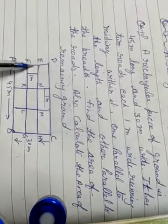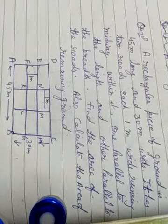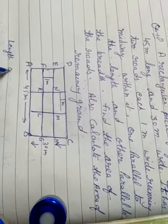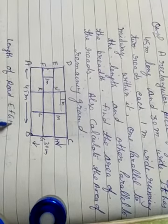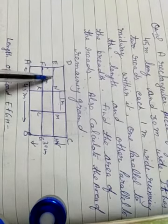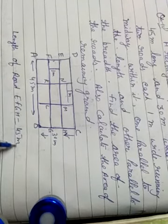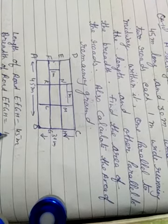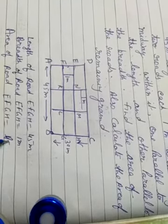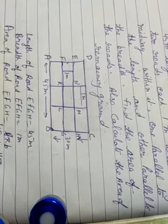Find the area of the roads. So children, the first road is named EFGH. We take length of road EFGH equal to the length of the field, which is 45 meters, and its breadth is 1 meter. So: length of EFGH is 45 meters and breadth of road EFGH is equal to 1 meter. Area of road EFGH is equal to L into B: 45 into 1 is equal to 45 meter square.